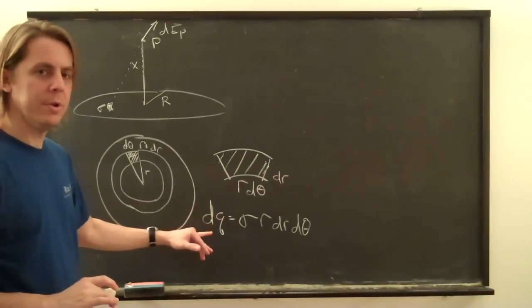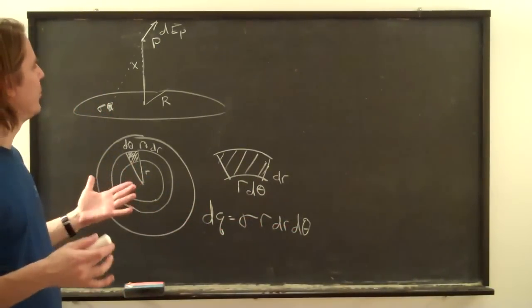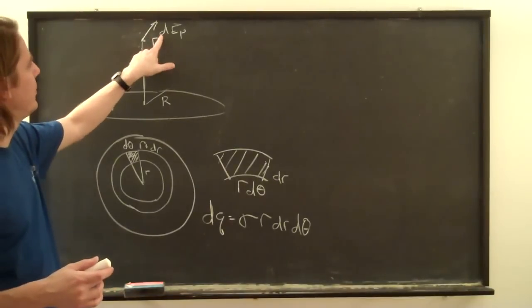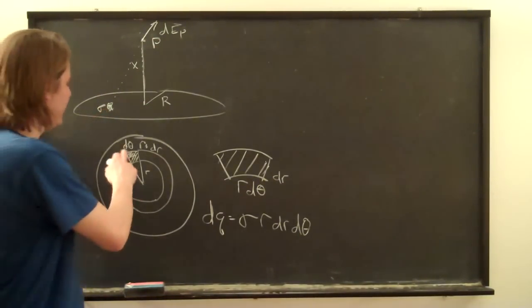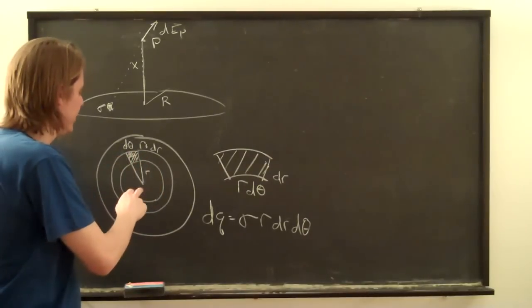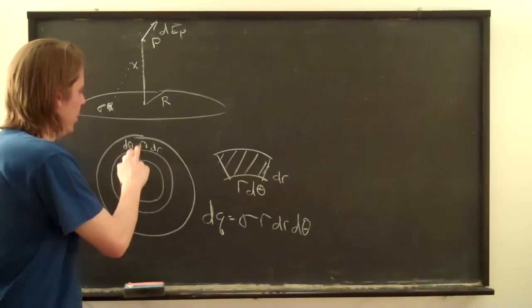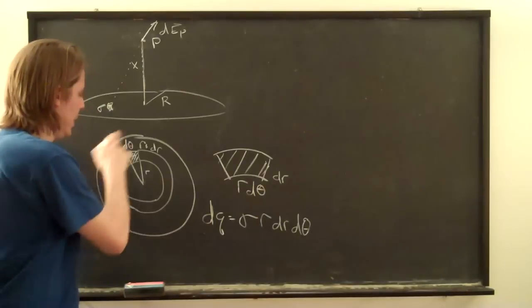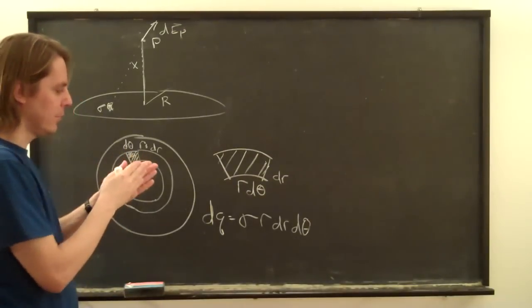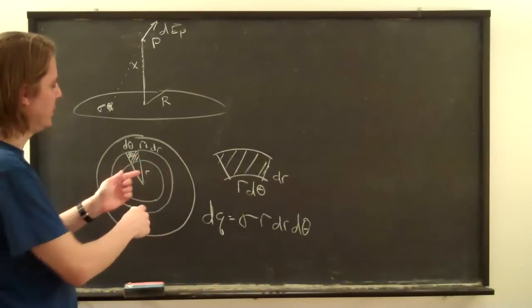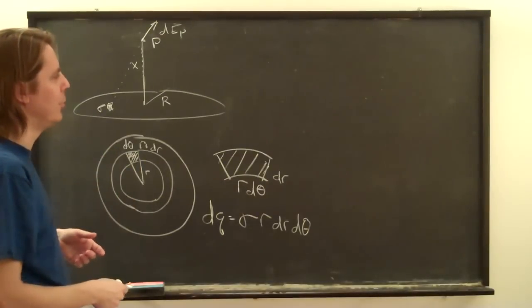So now that we have DQ in terms of the important variables, we can sum it up to get the total field. Because this is the piece of field, DEP, due to this little piece of charge. But then the way we've set this up, we can cover the whole disk. We can integrate from the radius from all the way from zero all the way out to the full radius, big R. And at each radius, we can go all the way around 2 pi. So it's just like a one-dimensional integral when you integrate along to get all the charge. Here we just have to do it in two dimensions. And since it's a disk, we naturally want to set it up in polar coordinates.